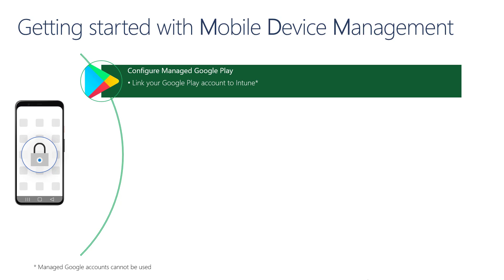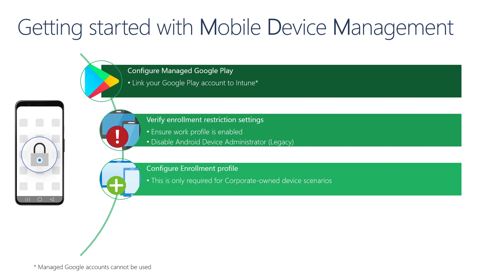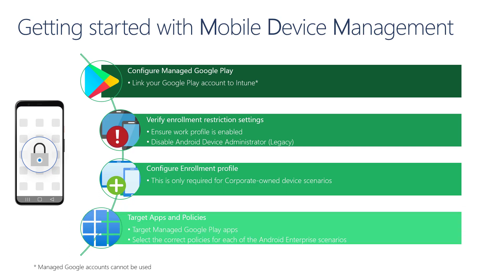It is important to note that managed Google accounts cannot be used in this step. You then need to verify the enrollment restriction settings in your tenant to ensure that work profile is enabled, and we also recommend disabling the legacy device administrator enrollment method to force new devices to be enrolled using Android enterprise instead. For corporate-owned device scenarios, you must also configure their respective enrollment profile settings in Intune.